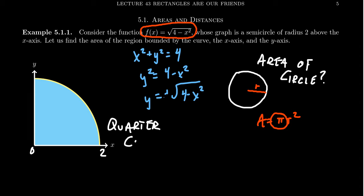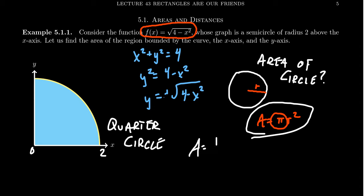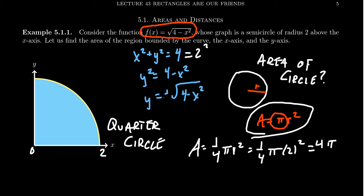Why do I care about that quarter circle? If the area formula for a circle is to be believed, the area of a quarter circle is (1/4)πr². With radius 2, that's (1/4)π(4) = π. So the area of this quarter circle is exactly the number π, and if we could calculate this area, we would know what π is.